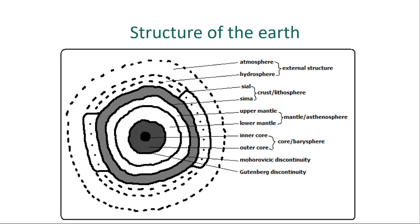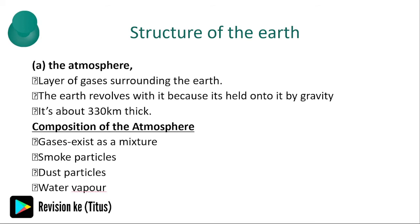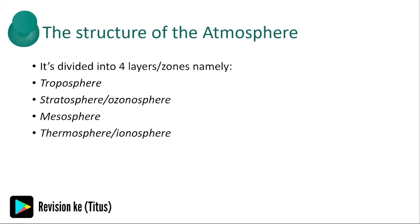This is the structure of the earth. You can pause the video and copy this out. The layers are: the atmosphere, the hydrosphere, the lithosphere, the crust, the mantle, and the core. The atmosphere is a layer of gases surrounding the earth. Its composition includes gases existing as a mixture, smoke particles, dust particles, and water vapor. The atmosphere is divided into four layers: the troposphere, stratosphere, mesosphere, and thermosphere.